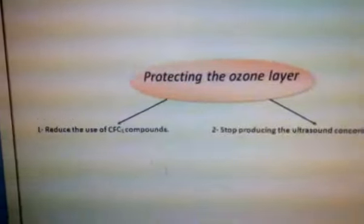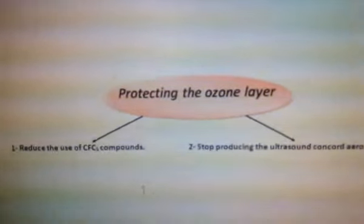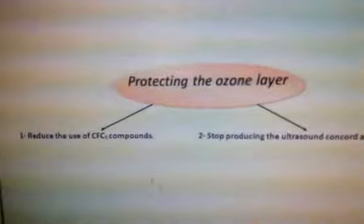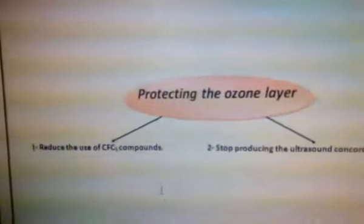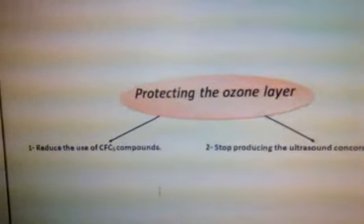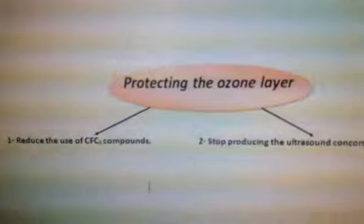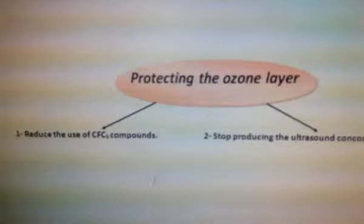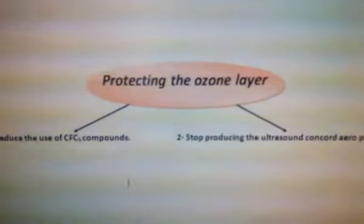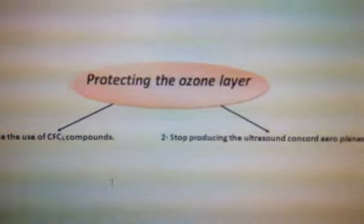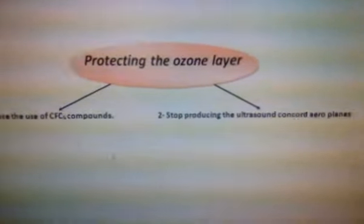So, how can we protect the ozone layer from erosion? First, by reducing the use of chlorofluorocarbon compounds. Two, by stopping the production of Concorde airplanes.